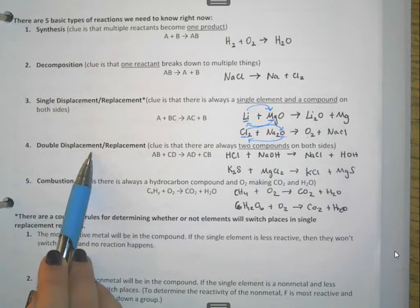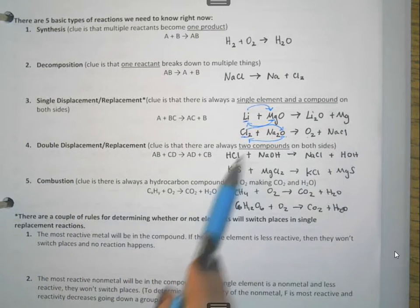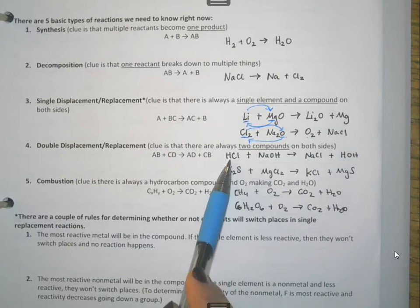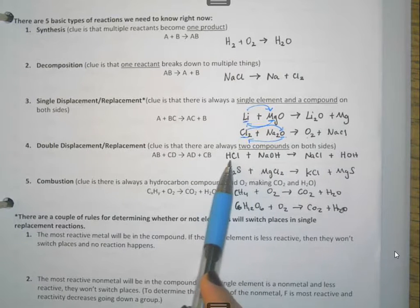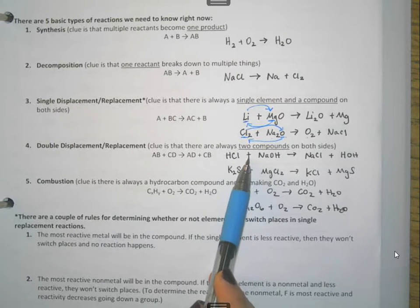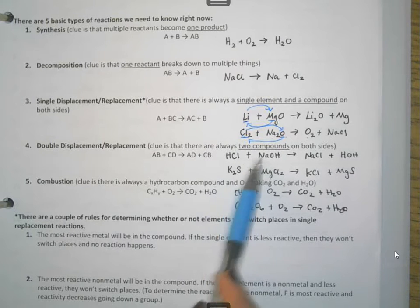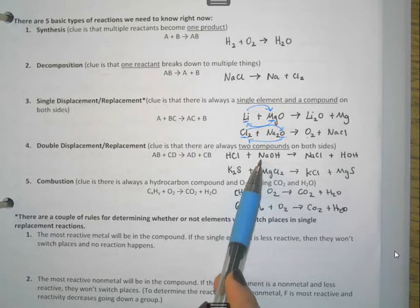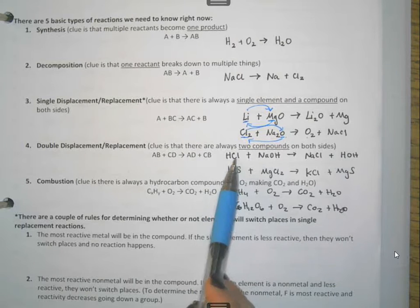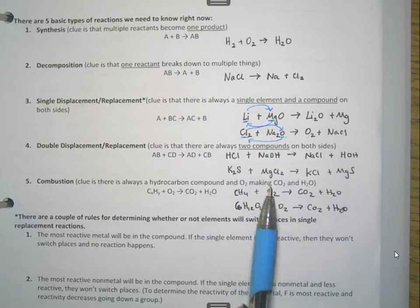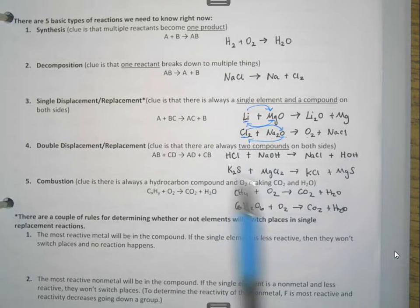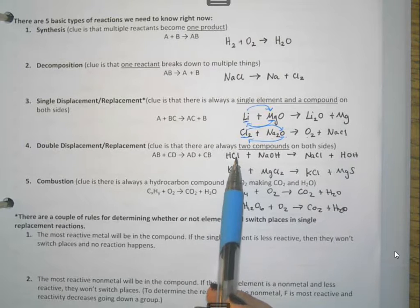When you have a double replacement, what you have and how you know that you have a double replacement is that you have compounds, two compounds on either side. In this example, I've got hydrogen chloride or hydrochloric acid plus sodium hydroxide. I see the plus sign. That tells me that I have two different substances, at least. Looking at it, how I know that it's a compound and not an element is I see two different chemical symbols. Capital letters is an easy way to recognize this. When I see a capital H and a capital C, I know that I've got two different symbols there together. So it's a compound.